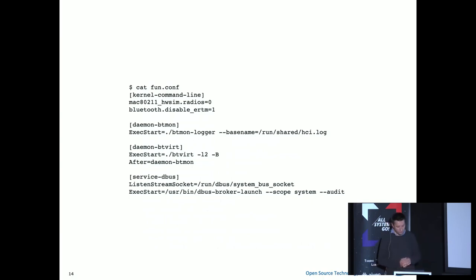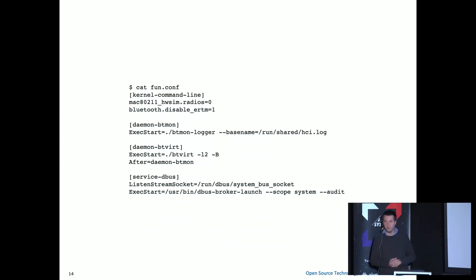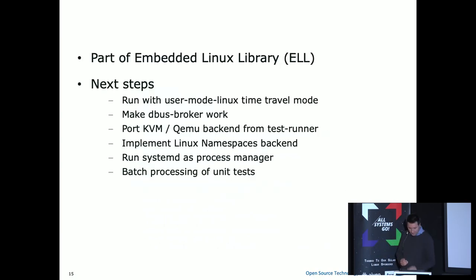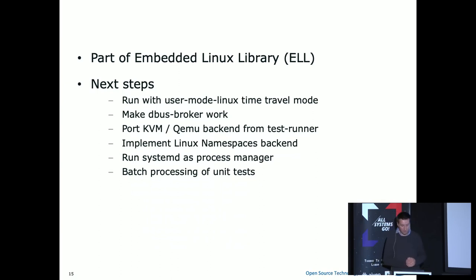If you want to start a virtual Bluetooth interface, you tell it to start two of them, tell it what daemon to start, and that's pretty much it — just tell it to start logging before the daemon. For the tricky part you also have to give it the dbus things; if you want to do testing on dbus, it starts dbus using socket activation and the dbus broker as well. It's all part of the Embedded Linux Library. This is the main core functionality for us — it contains everything we need. All our communications daemons just need this library, because it contains netlink, dbus, and everything else, so we don't have a massive amount of dependencies.